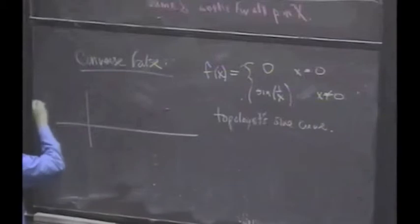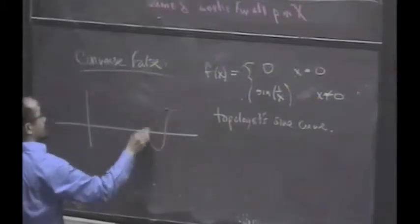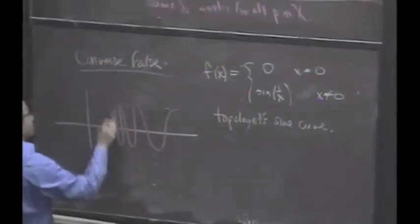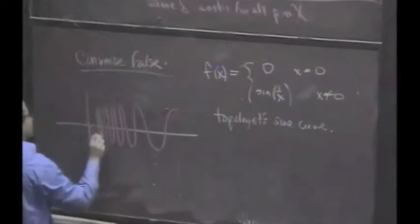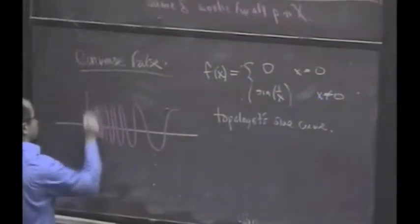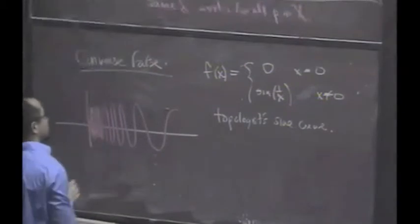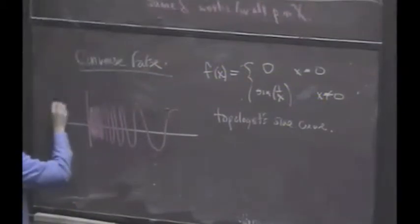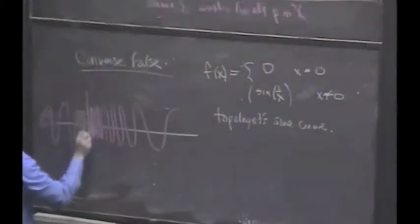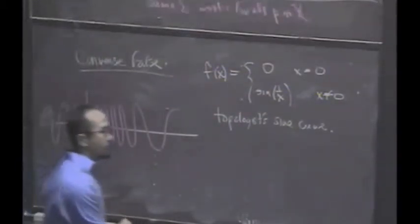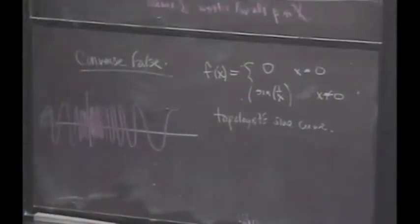So, take the sine of 1 over X. It basically oscillates between 1 and minus 1, but it oscillates more and more as you get towards the origin. Similarly, this does the same thing on this side. And then at 0, you just tell it to be 0, right there.